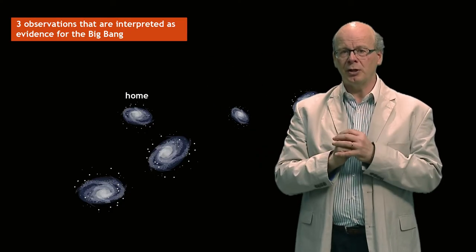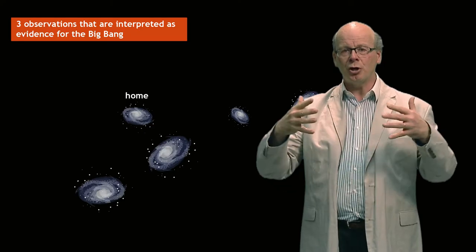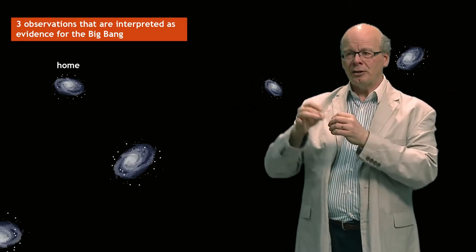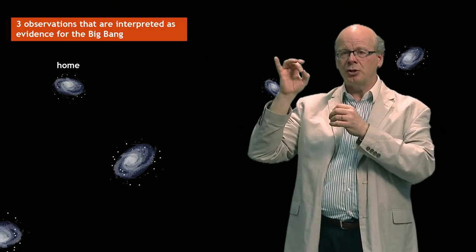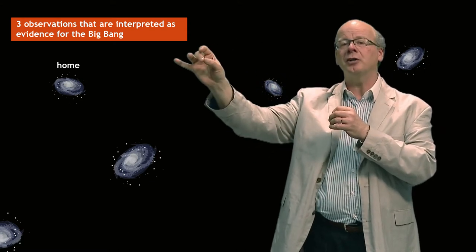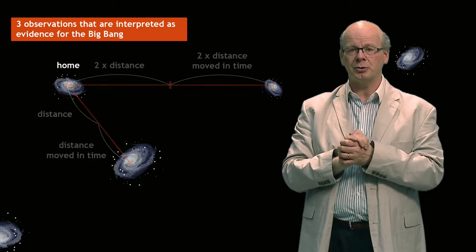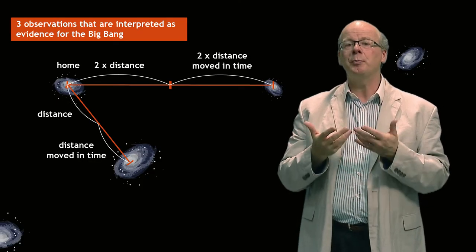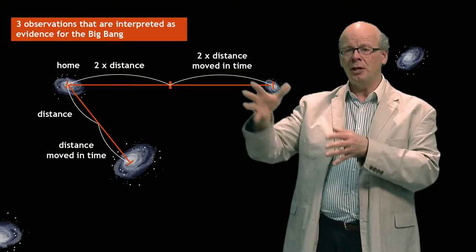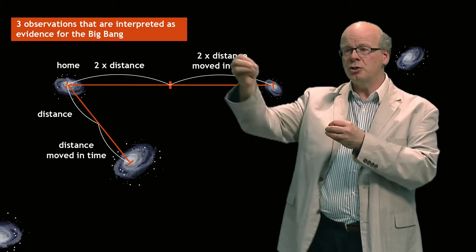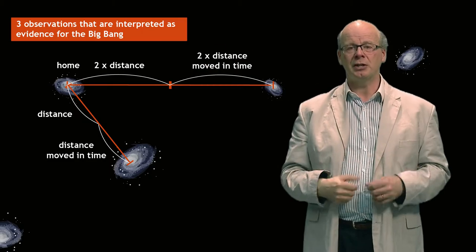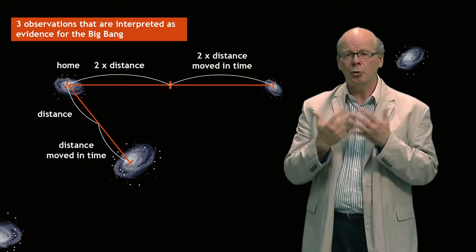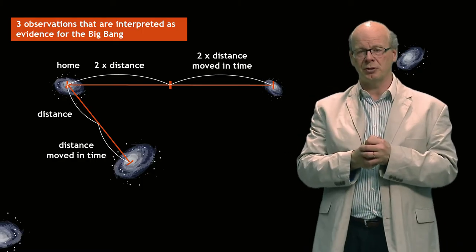Not only were they very far away, but they were also flying away from us. And the further away the galaxy was, the faster it was flying away from us. And that law is very precise. It's not just the further the faster, it's twice as far, twice as fast. And that's called Hubble's law, after the American astronomer Edwin Hubble, who was one of the astronomers who discovered this.